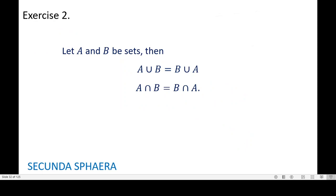Exercise number 2 says: let A and B be sets. Then A union B is equal to B union A, and also A intersection B is equal to B intersection A. Please try this exercise on your own. There is no proof in this video; however, it will be used here and the proof will come in another video at a later time.